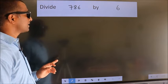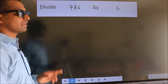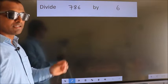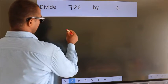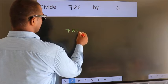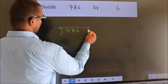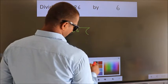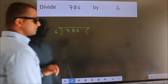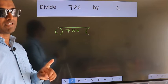Divide 786 by 6. To do this division, we should frame it in this way. 786 here, 6 here. This is your step 1.